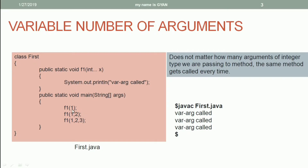We can call the method f1 using one argument, two arguments, or three arguments. In all three cases, the method f1 will be called and it will print 'var arg called'. So no matter how many integer arguments we pass to the method, the same method gets called every time, printing 'var arg called' three times.